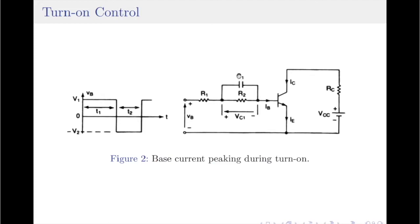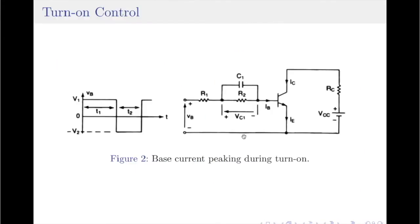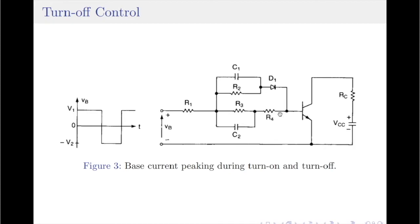The discharging time constant of the capacitor is given as Tau2 equals R2 multiplied by C1. To allow the capacitor to charge and discharge sufficiently, the widths of the base pulse during turn-on and turn-off must be greater than Tau1 and Tau2 respectively. Remember that this circuit provides equal turn-on and turn-off times. On the other hand, if you want different turn-on and turn-off times, then you will use a circuit as shown in the figure here.